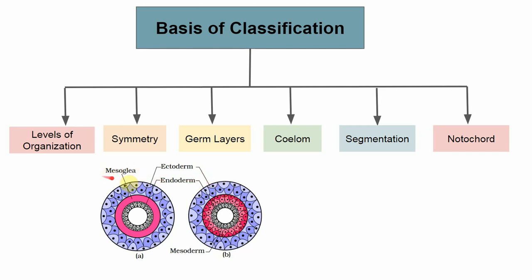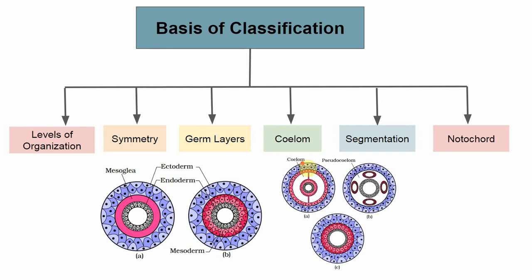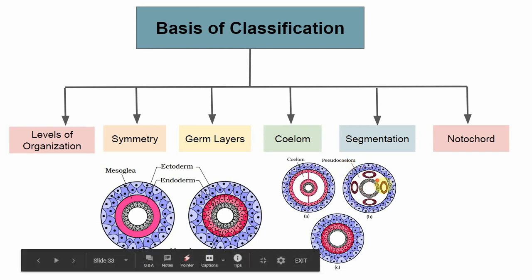In diploblastic organisms, there is a special undifferentiated layer between the ectoderm and endoderm, referred to as mesoglea. Moving on, the next basis is the coelom, commonly called the body cavity. Animals with a true body cavity lined by coelomic epithelium derived from mesoderm are called coelomates. Some organisms have a body cavity not derived from coelomic epithelium — the mesoderm is scattered as pouches — and we call this a pseudocoelom. Organisms with no body cavity at all are called acoelomates.